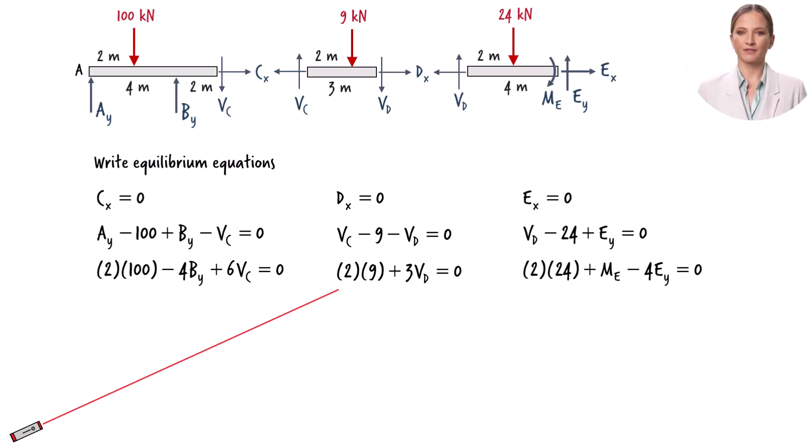Since this equation has one unknown only, we can use it to solve for Vd. By substituting negative 6 for Vd in this equation, we can determine Vc.